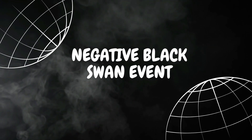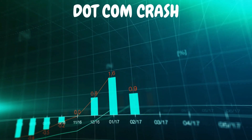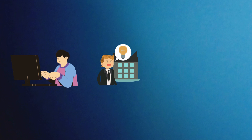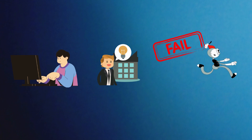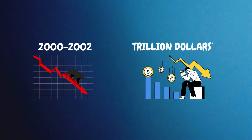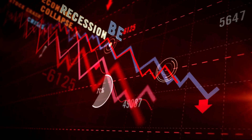Next, we have two prominent examples of negative black swan events from the finance world. First is the dot-com crash. Due to the rapid growth in internet usage in the 1980s and 1990s, many internet companies were launched. However, a lot of these companies failed after some time, and many of those that were successful were severely overvalued. From 2000 to 2002, several internet companies crashed, resulting in significant losses for investors. The dot-com crash wiped out nearly a trillion dollars worth of stock value, and the Nasdaq composite lost 78% of its value.